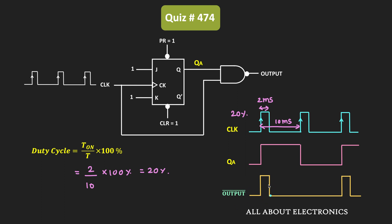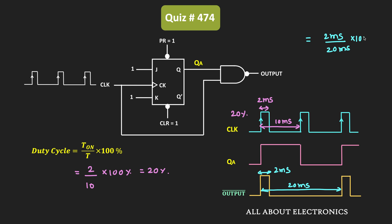If we see the duty cycle of this output bar, it will be equal to 10%. The on time is still equal to 2ms, but if you see the total time period, it has been doubled — instead of 10ms, it is now equal to 20ms. So the duty cycle of output bar equals 2ms divided by 20ms times 100%, which is equal to 10%.